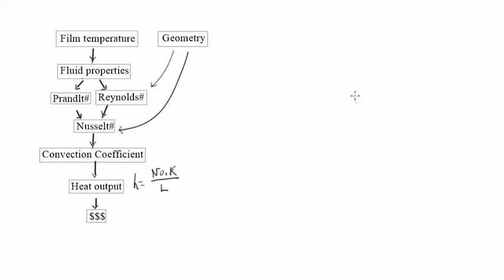This is the flowchart which we can use to solve fluid problems. We start with the film temperature. In the last problem we knew the temperature of the surface and the temperature of the air, so we calculated the average of those two and that was the film temperature.